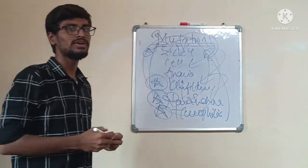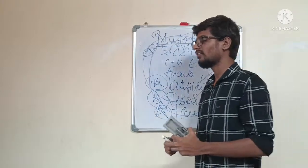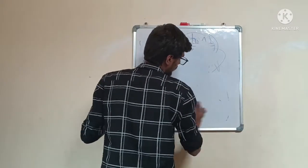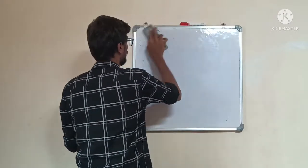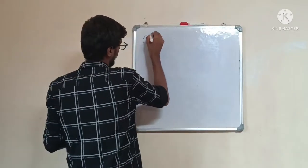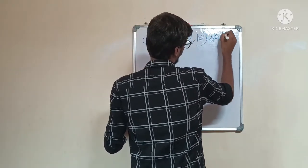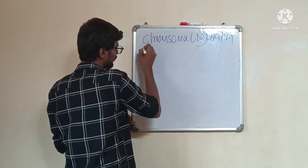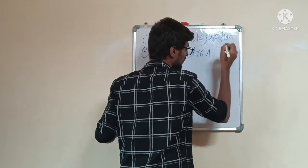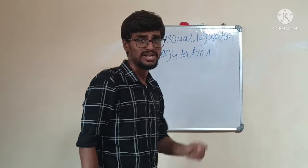Moving to the next part: the types of mutations. There are two types of mutations in our syllabus. The first is called chromosomal mutation, and the second is gene mutation. These are the two types of mutations that can occur in organisms, both vertebrates and invertebrates.